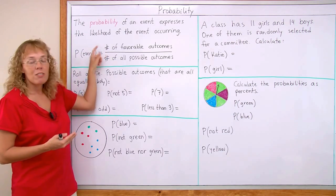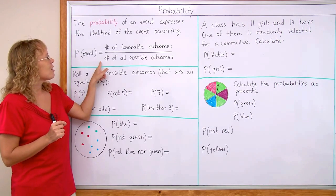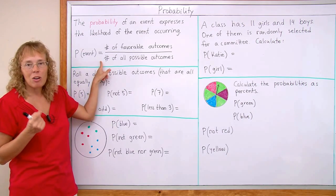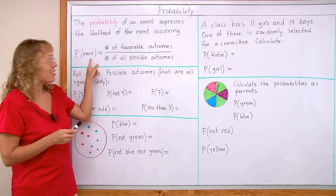We just check the number of favorable outcomes, so to speak, whatever we are looking at, and then the number divided by the number of all possible outcomes. And our examples here will make this clear. It is a very simple formula.